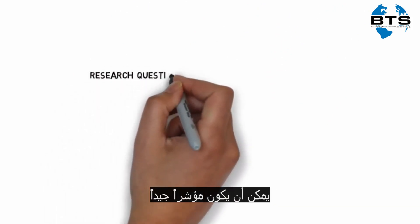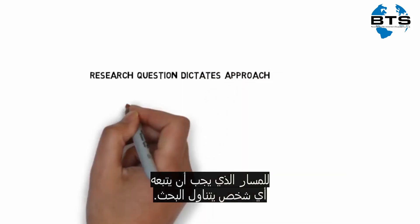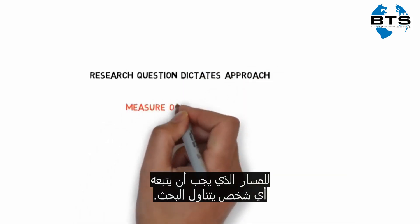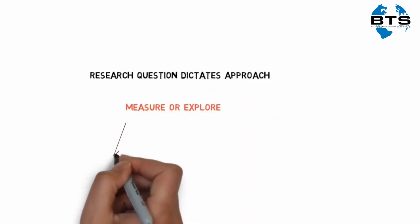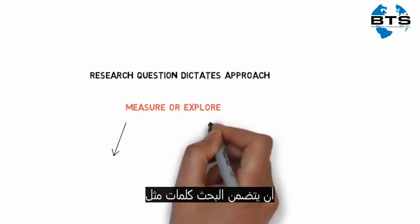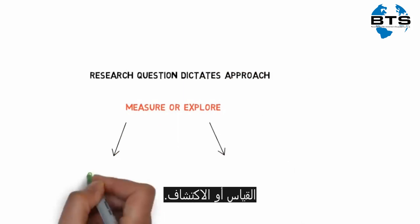Your research question can also be a good indicator as to which way one should approach their research. For example, your question may include words like 'measure' or 'explore' — clear pointers as to the type of research that needs to be carried out.